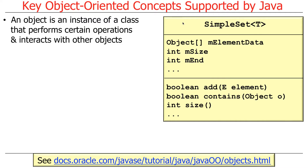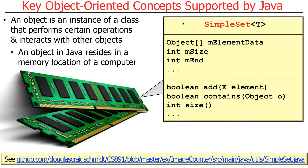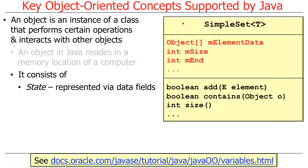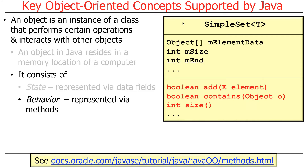Here's a very simple example called SimpleSet. Objects reside in the memory location of a computer. In this example we show how to make a simple set. You have some state, which are the fields like the element data and the size and so on. We have some behavior, which are represented by methods like add, contains, and so on. And these are just the ways in which you interact with a class.